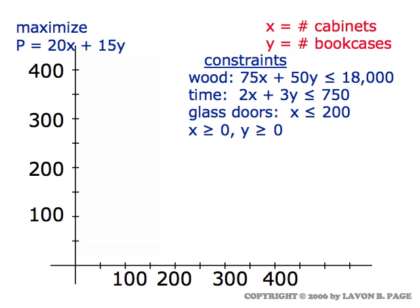The wood constraint is that the amount of wood used on cabinets plus the amount of wood used on bookcases cannot exceed the 18,000 units of wood that were available. In this example, the units of wood were measured in board feet, so we're talking about 18,000 board feet here. The time constraint is in hours based on how much time it takes to make a cabinet, how much time it takes to make a bookcase, and the total number of hours of labor time available.